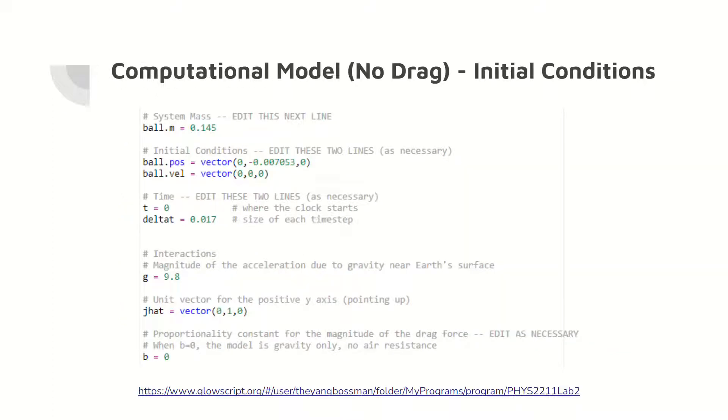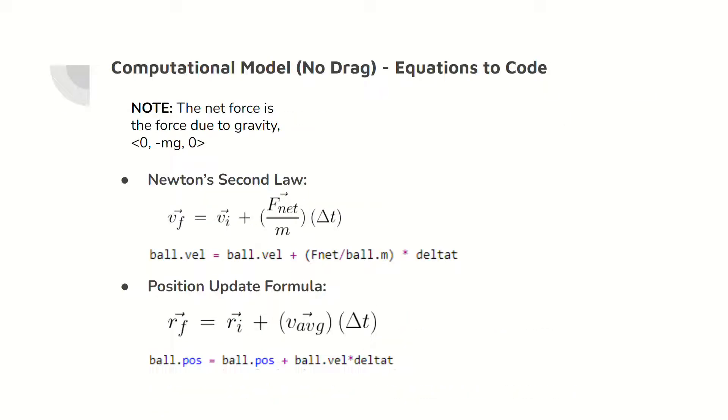Here are the initial conditions for the computational model with no drag force, as reflected by b equals 0 in the code. These initial conditions are copied from the tracker initial conditions. Newton's second law and the position update formula are expressed as code for both computational models on this slide. The net force for this model is only the force due to gravity.